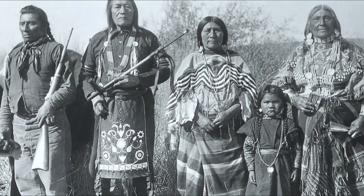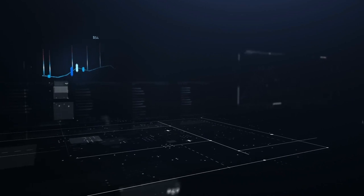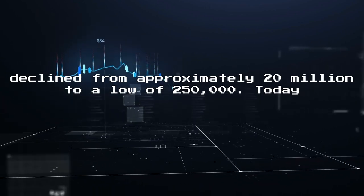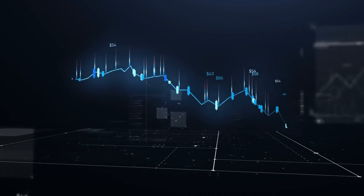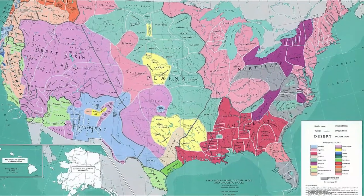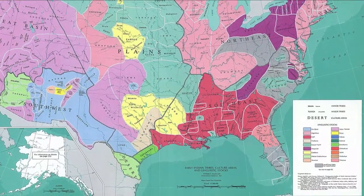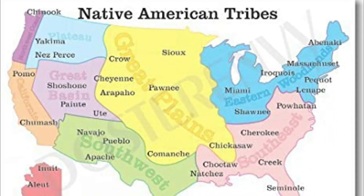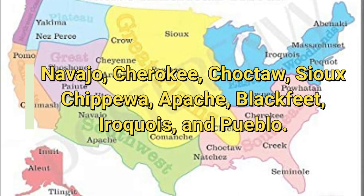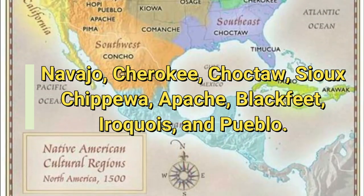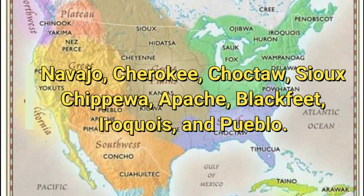From the 16th through the 19th centuries, the population of Native Americans sharply declined from approximately 20 million to a low of 250,000. Today, there are approximately 2.9 million Native Americans in North America. As of 2000, the largest groups in the United States by population were Navajo, Cherokee, Choctaw, Sioux, Chippewa, Apache, Blackfeet, Iroquois, and Pueblo.